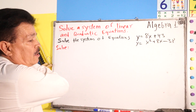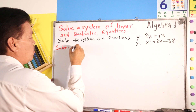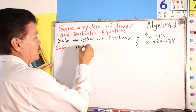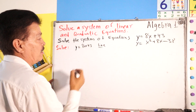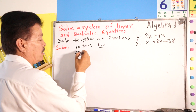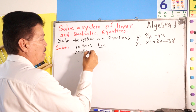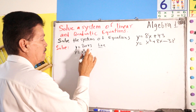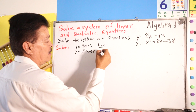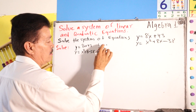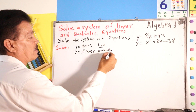It's simple. We have this kind of problem: y equals 8x plus 43. This is a line. And the second equation, x to the second power plus 8x minus 38 — this is a parabola.